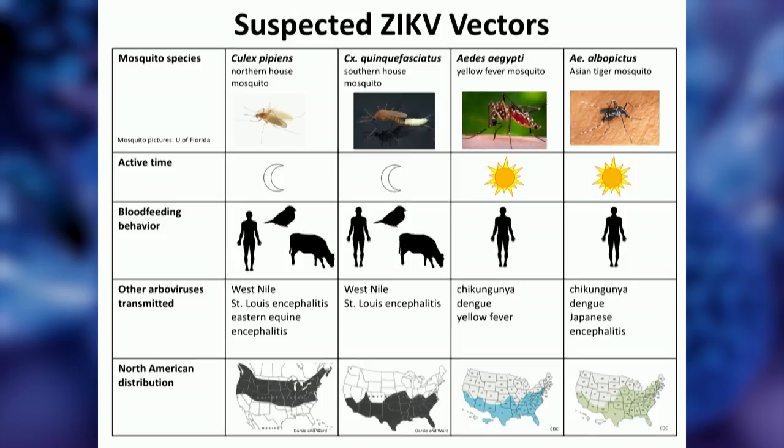One important reason to know whether North American Culex can transmit Zika is their range. Culex pipiens in particular extends much farther north than the Aedes species. When that press release came out, mosquito and vector control districts around the United States expressed significant concern about understanding whether there had been a major host switch. So how do we know which mosquito species are competent vectors?